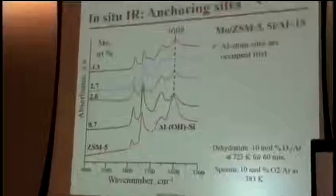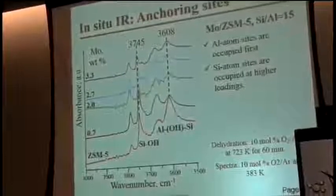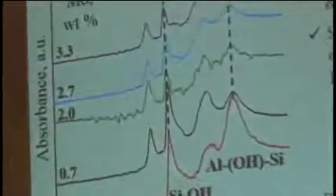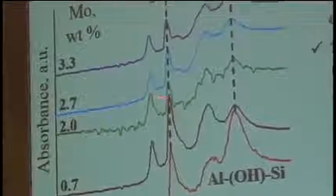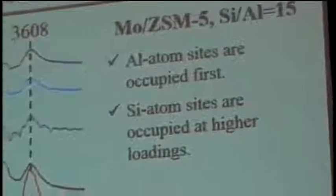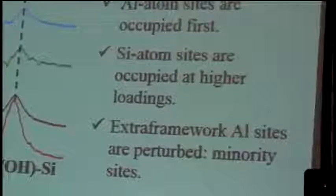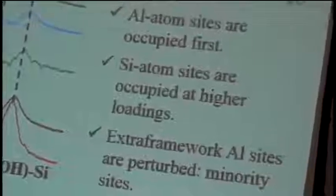So when we put the molybdenum, this peak decreases dramatically. The second is silica sites on the external surface. They are reduced at higher molybdenum loading. And we have a third one, which is a minority species. We do see extra-framework aluminum, and they're slightly perturbed. So these also serve as additional anchoring sites, although it's hard to see them in the Raman spectrum.